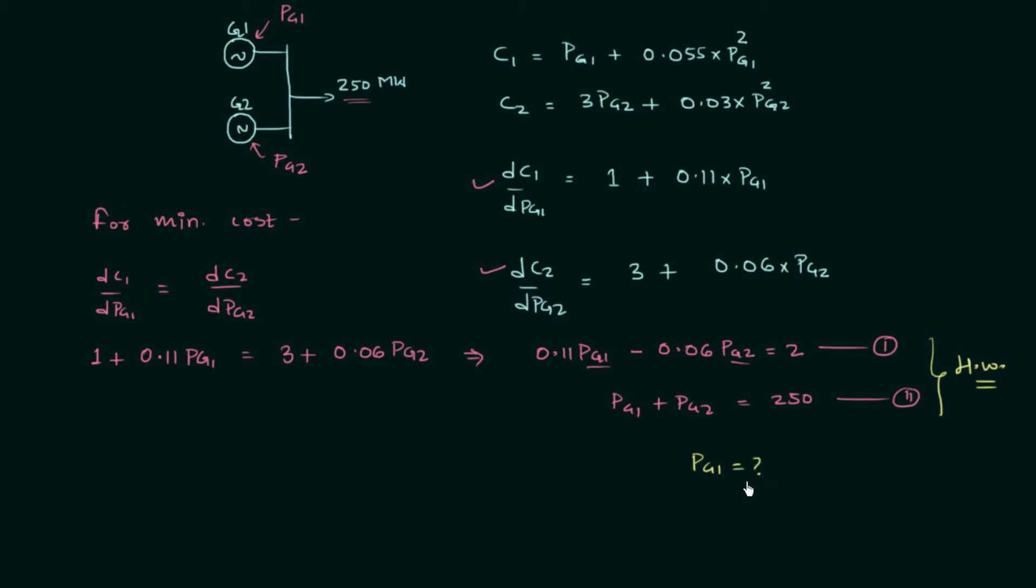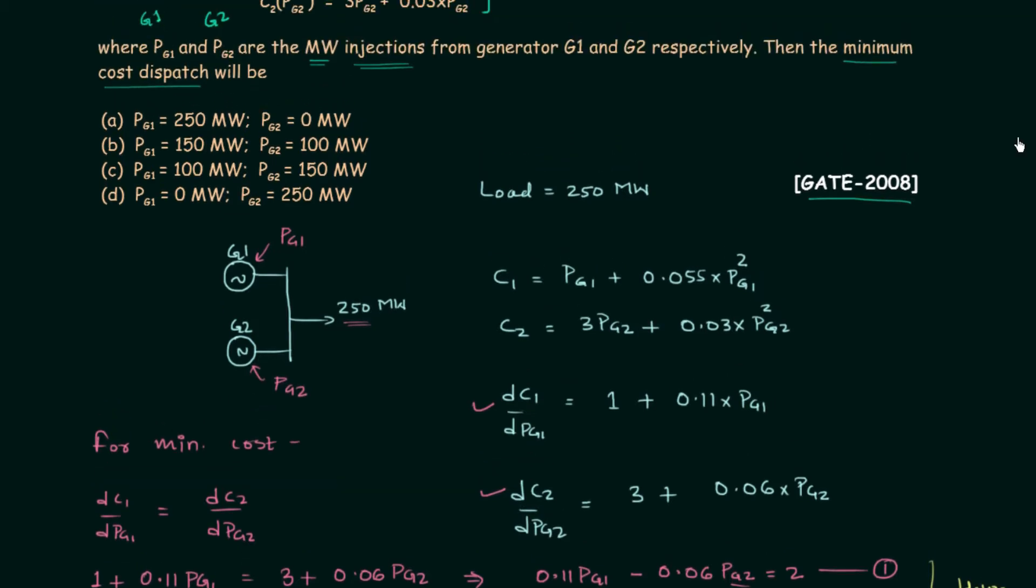Calculate PG1 and PG2, and once you have your answer, post it in the comment section. You can directly write down the values of PG1 and PG2, or you can simply write down the correct option from A, B, C, D.